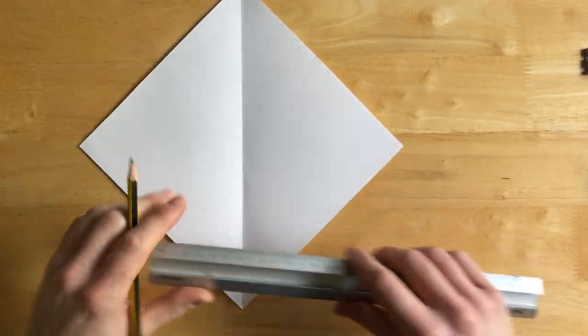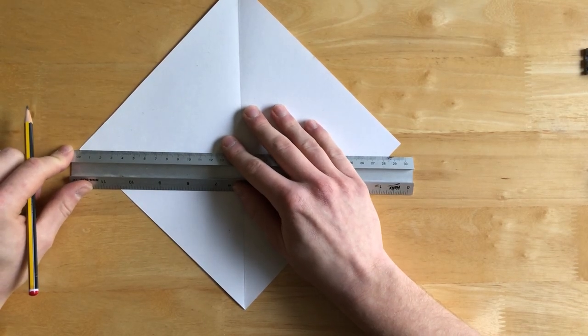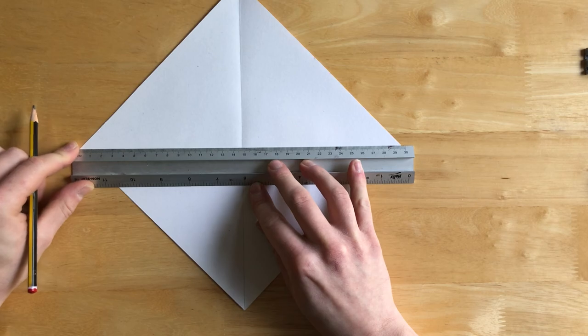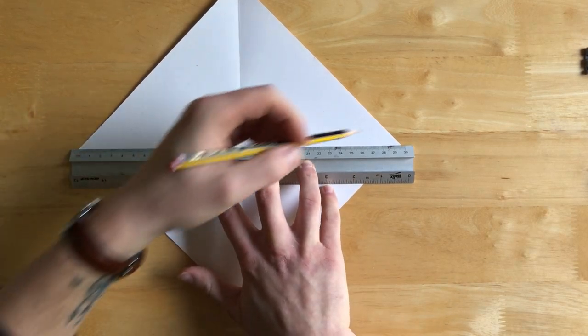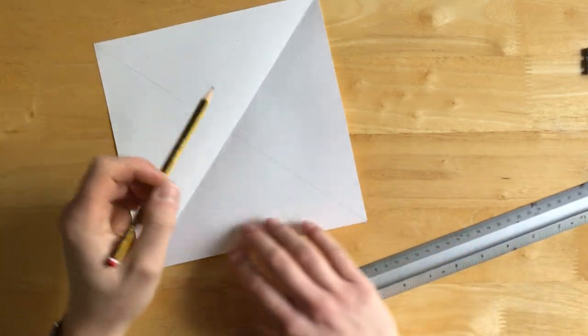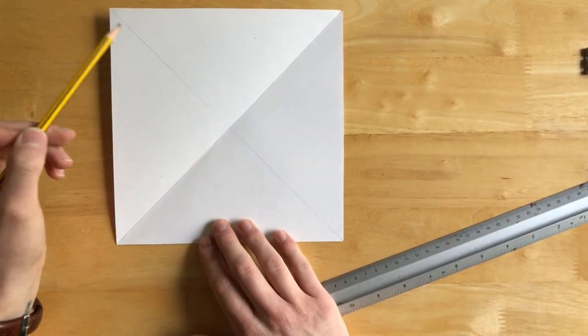And we're going to do the same now on this side. So again, I'm going to place my ruler on that corner there. Shift that side of the ruler up so it's on that corner. And when I'm happy with that, press the ruler down and draw a nice light line across the page. And you'll see here I have a very faint X.